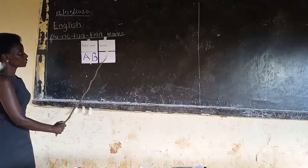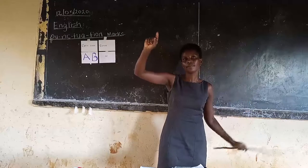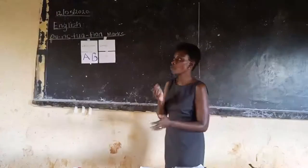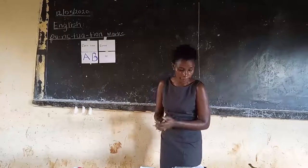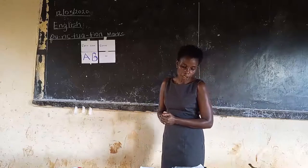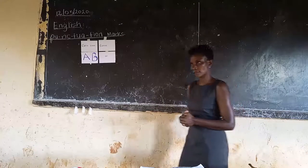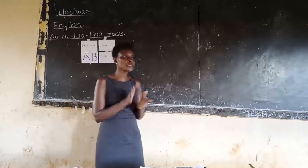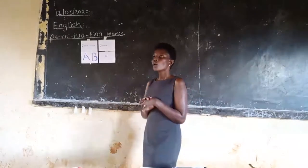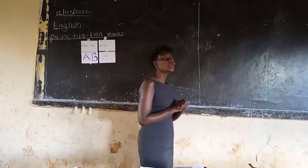And the sign is like this. Let's write a comma in the air, everybody. Is there anyone who knows when we are supposed to use commas? We use commas when we are listing down items or objects.